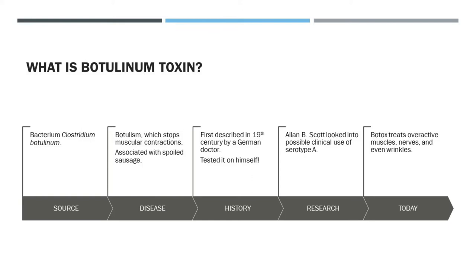This toxin has also been famously associated with spoiled sausage, among other sources. While the disease has been around for centuries, it wasn't really first clinically described until the early 19th century, when the German physician Justinus Kerner called it sausage poisoning and studied it further, going as far as to even test it on himself.